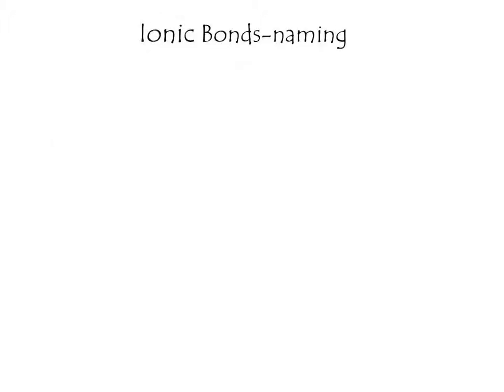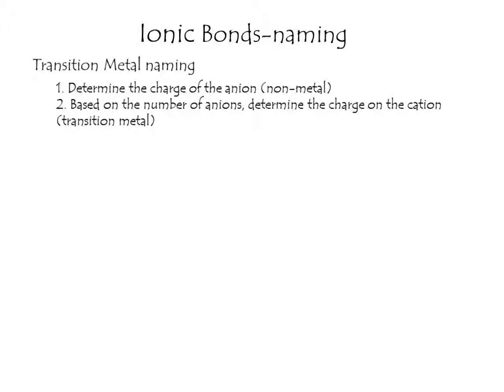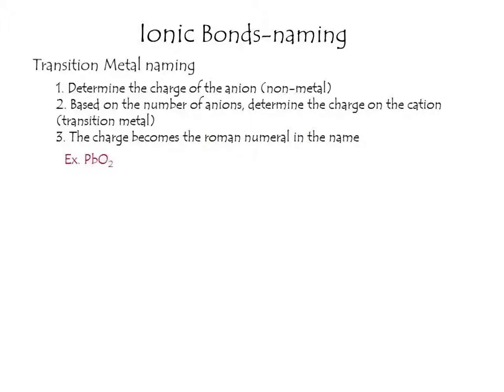Let's recap the steps to determine the name from a chemical formula: 1) Determine the charge of the anion, meaning the nonmetal. 2) Based on the number of anions, determine the total charge on the cation. 3) The charge per cation becomes the Roman numeral in the name.